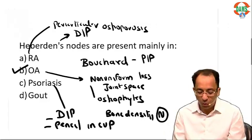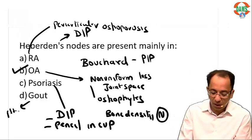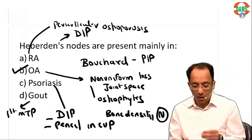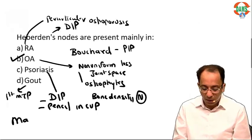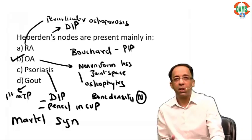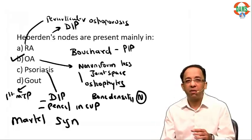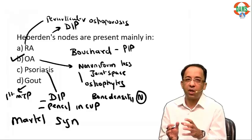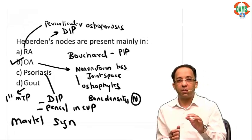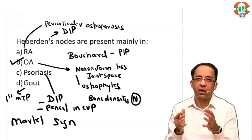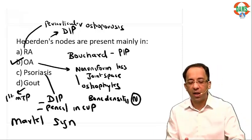For gout, remember the first metatarsophalangeal joint, with punched-out erosions also called rat-bite erosions, and the named sign is the Martel sign. Gout is a very important topic for UPSC-CMS. These are joint disorders and arthritis findings they have asked indirectly in the exam.